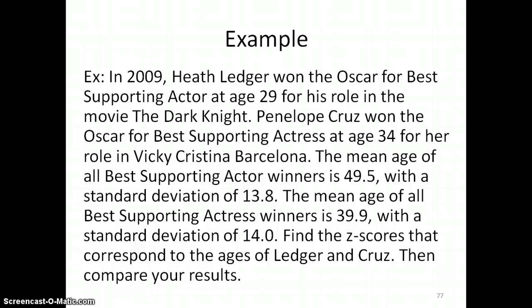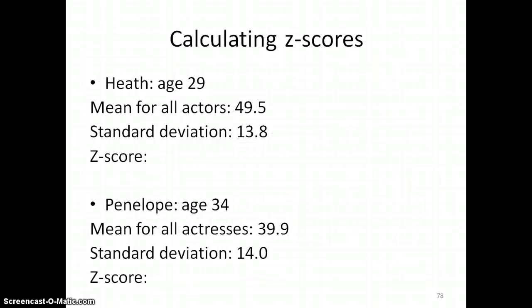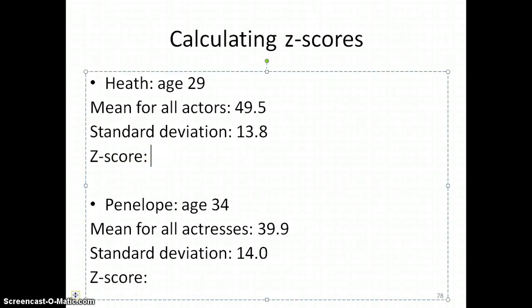To do that, we're going to need our z-score formula. It told us that Heath was age 29, but all actors are 49 with a deviation of 13.8. To get his z-score, we take his value and subtract the mean for all actors.